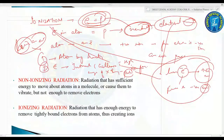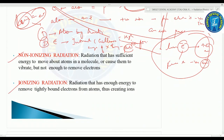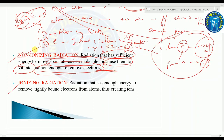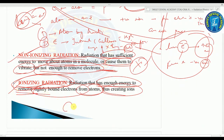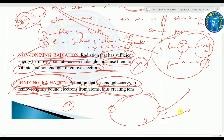Radiation is of two types: non-ionizing and ionizing. Non-ionizing radiations have sufficient energy to move atoms in a molecule or cause them to vibrate, but not enough to remove electrons. Ionizing radiations have enough energy to remove tightly bound electrons from atoms, thus creating ions.